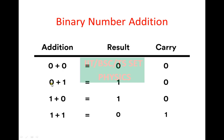0 plus 1, result is 1, carry is 0. Next, 1 plus 0, result is 1, carry is 0. And 1 plus 1, result is 0, carry is 1.